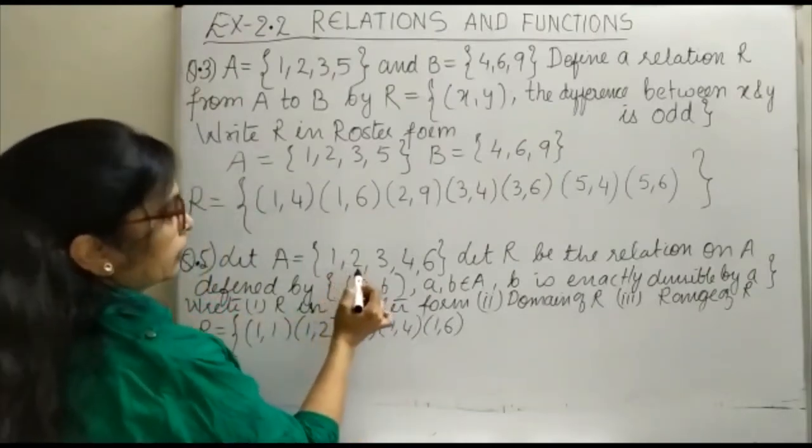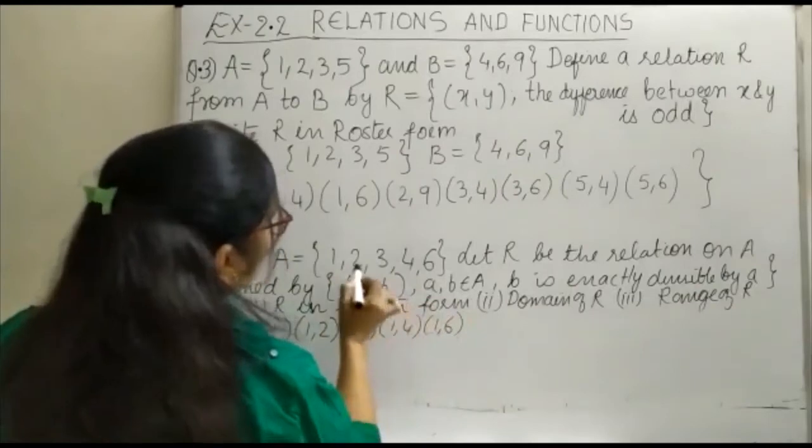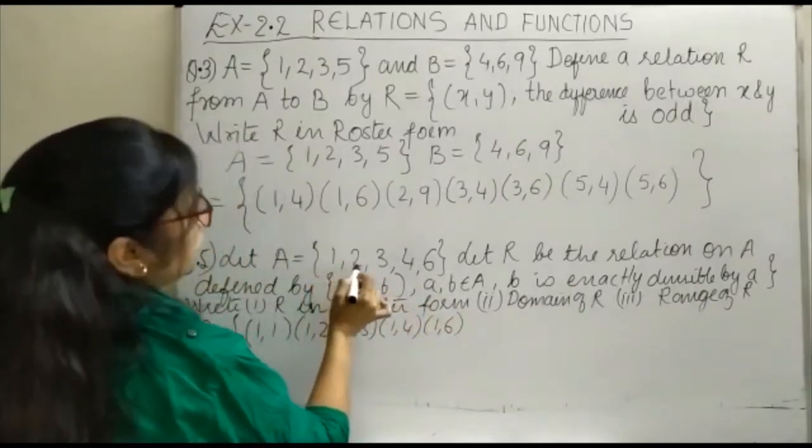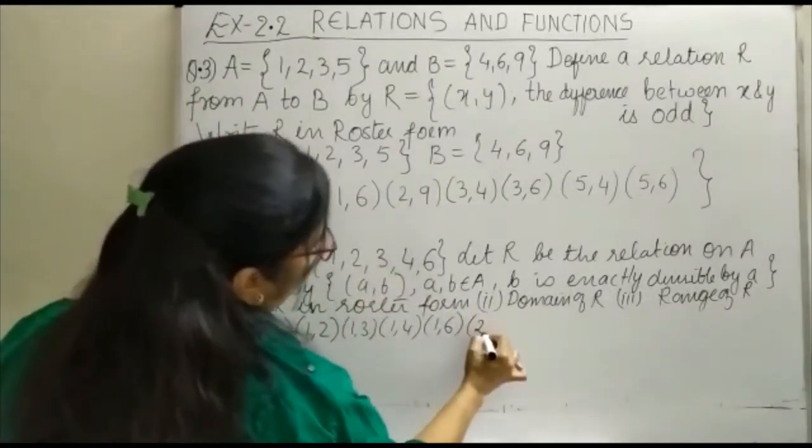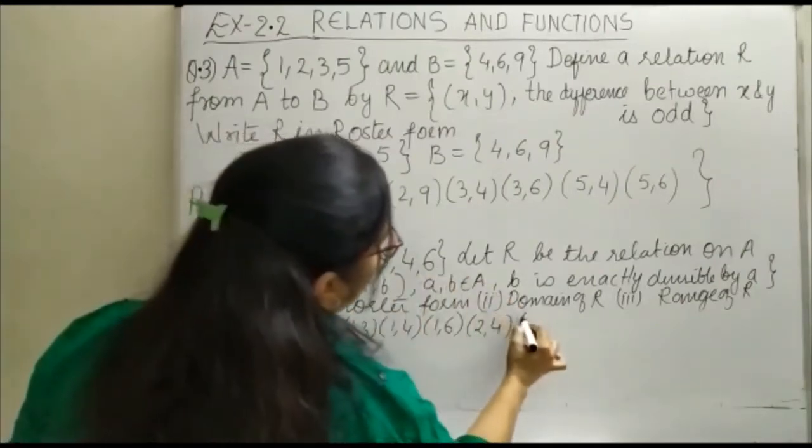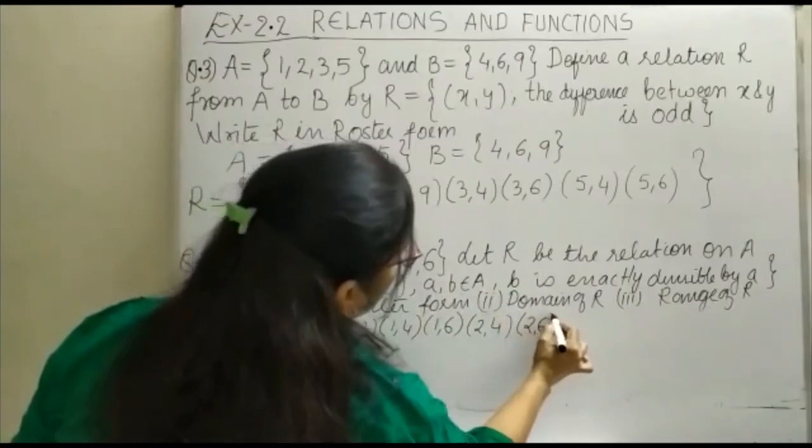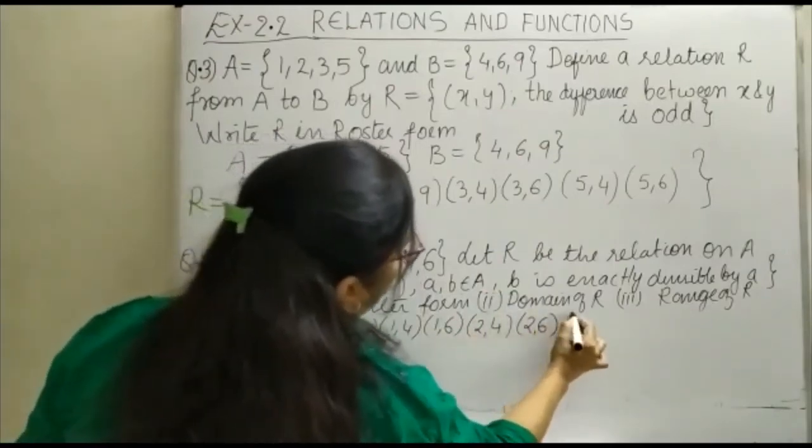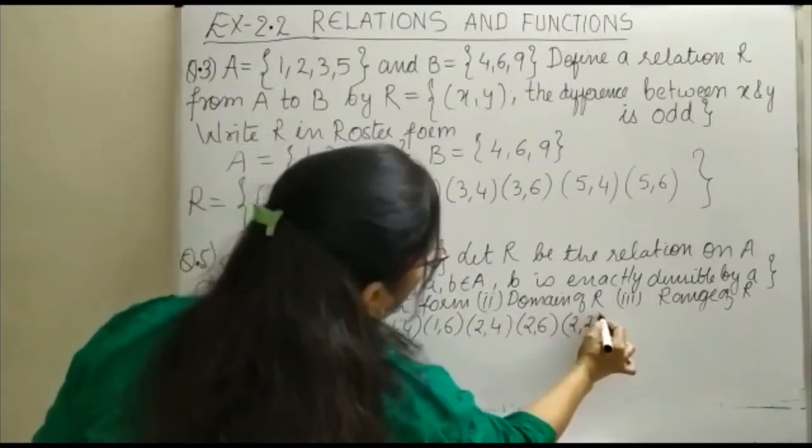When we take 2, with 2, 1 will not come, 3 will also not come. With 2, what will come? (2,4) we will get because 4 is divisible by 2, and with 2 you will get 6, and you will get (2,2) also.